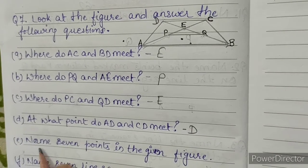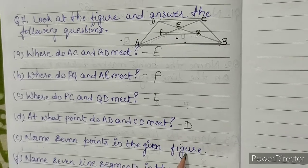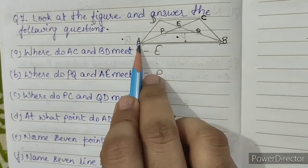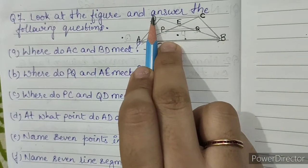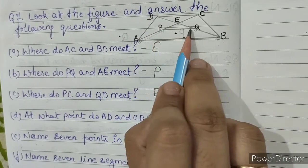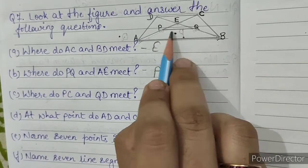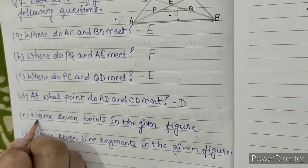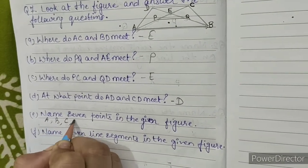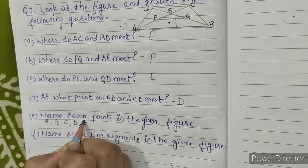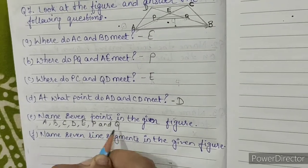E: name 7 points in the given figure. The points are A, B, C, D, E, P and Q. So we will write A, B, C, D, E, P and Q.